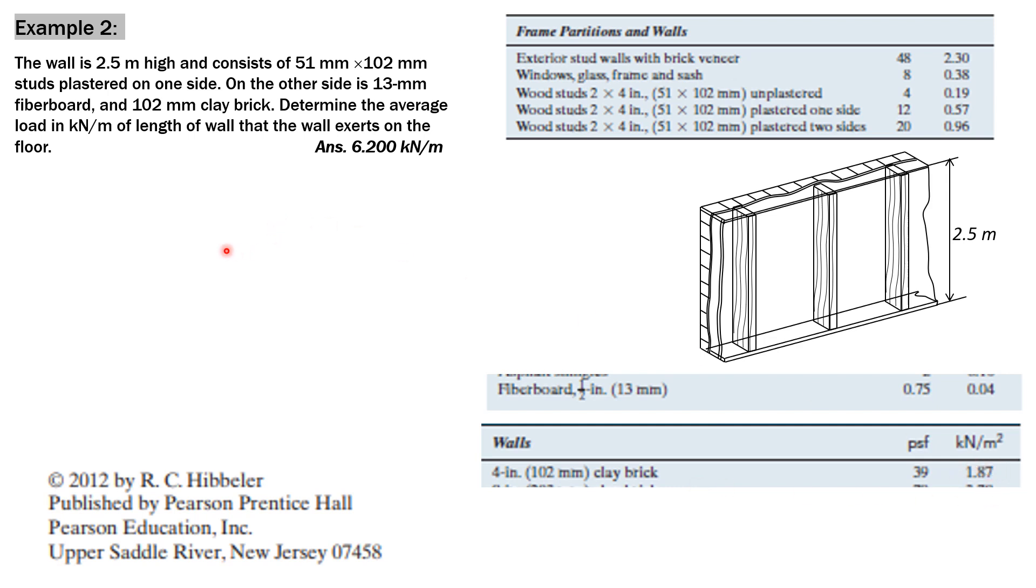Therefore, the uniform load, W, is equal to quantity in kilopascals, 0.57 plus 0.04 plus 1.87. And since the height of the wall is 2.5, multiply that by 2.5 to get uniform weight in kilonewton per meter.